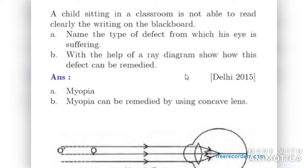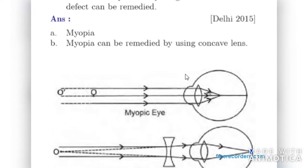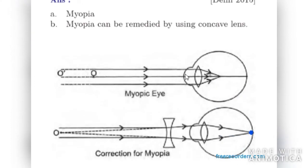With the help of a ray diagram, show how this defect can be remedied. In this case, you must draw the myopic eye first, then make the correction for myopia. In myopic eye, the image is formed before retina. Now when a concave lens is placed in front of the eye, the image has been shifted to retina. Therefore he can see better.